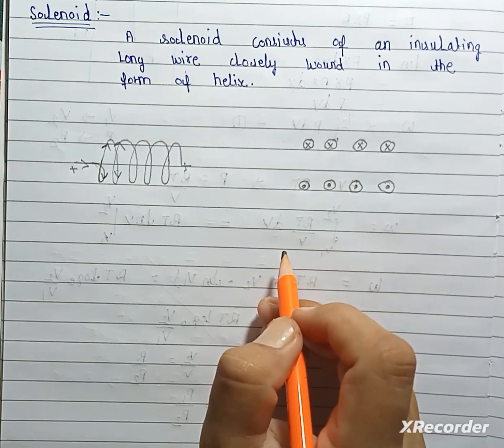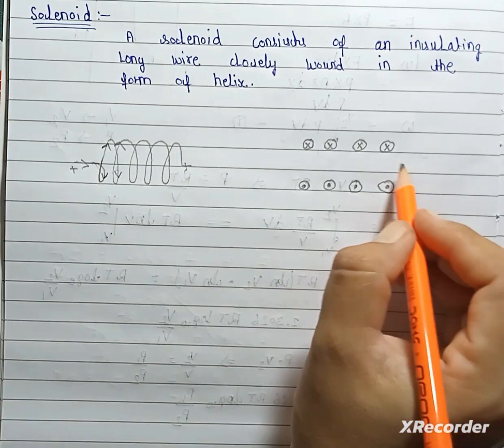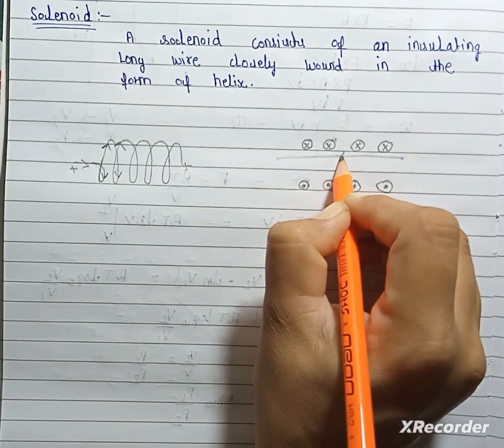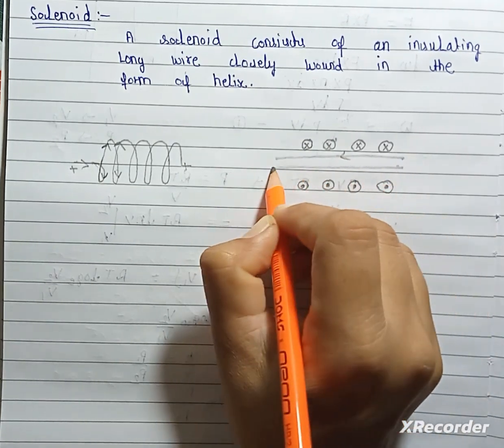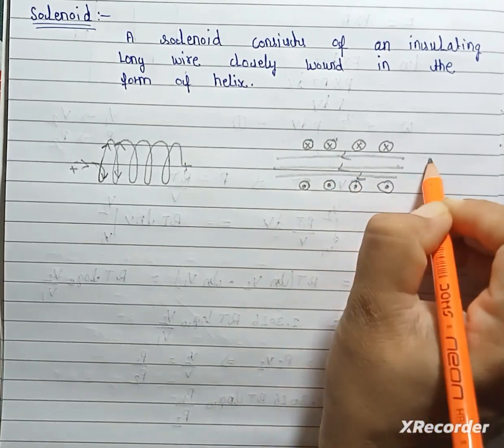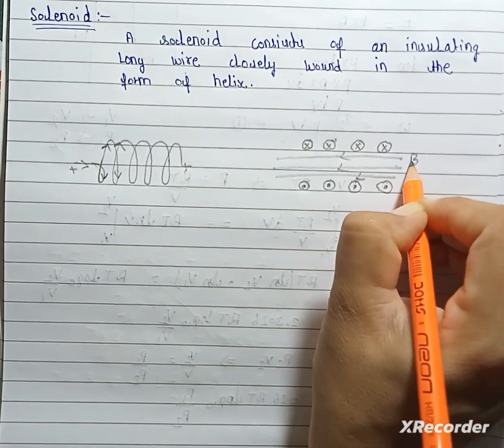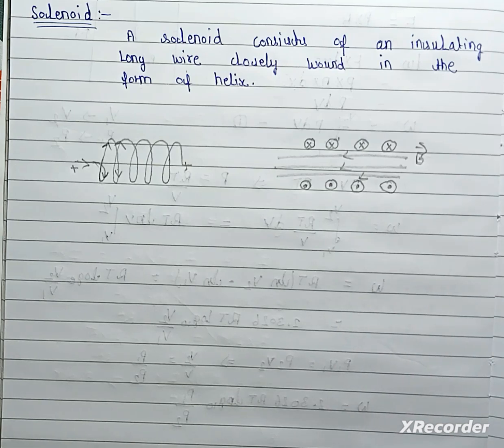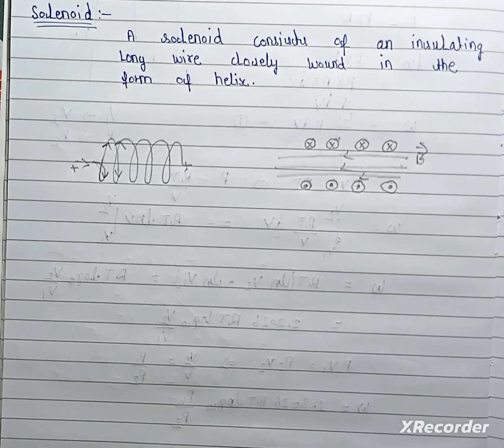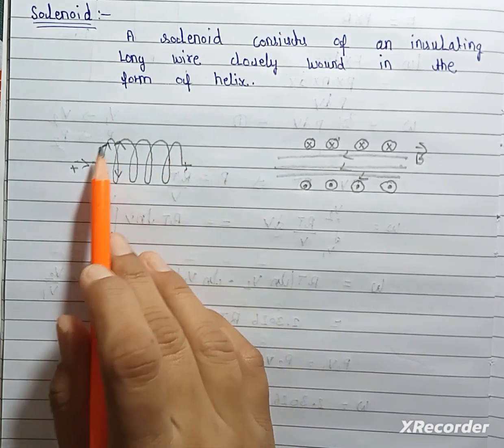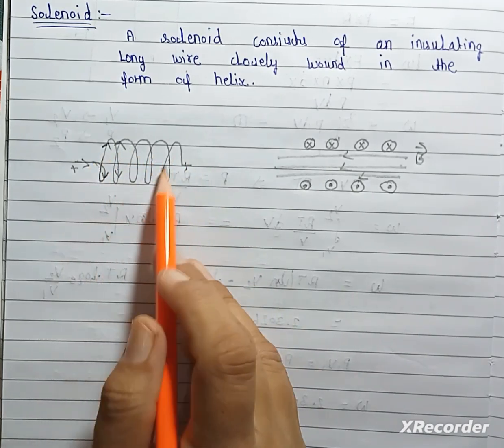Here, magnetic field flows in this direction. Now, total magnetic field of solenoid is vector sum of all turns.